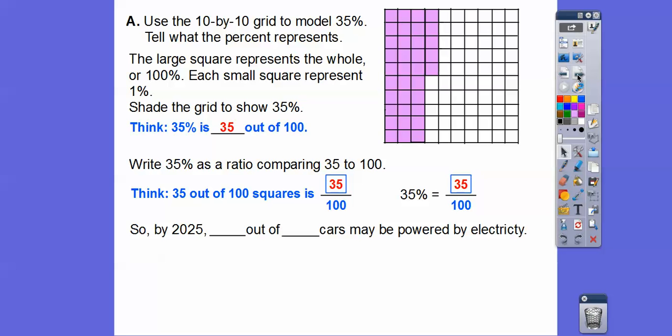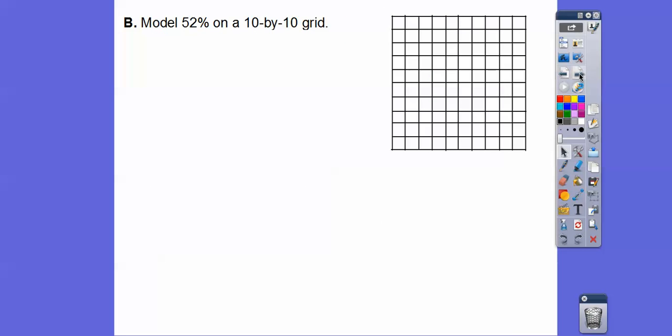35 hundredths is 35 per 100 right there. Let's see that 35% is 35 out of 100. Our answer to our question here is by 2025, 35 out of 100 cars will be powered or may be powered by electricity. Do you think it's going to be exactly that? Probably not, but somewhere around 35%, maybe more, maybe less. Who knows?